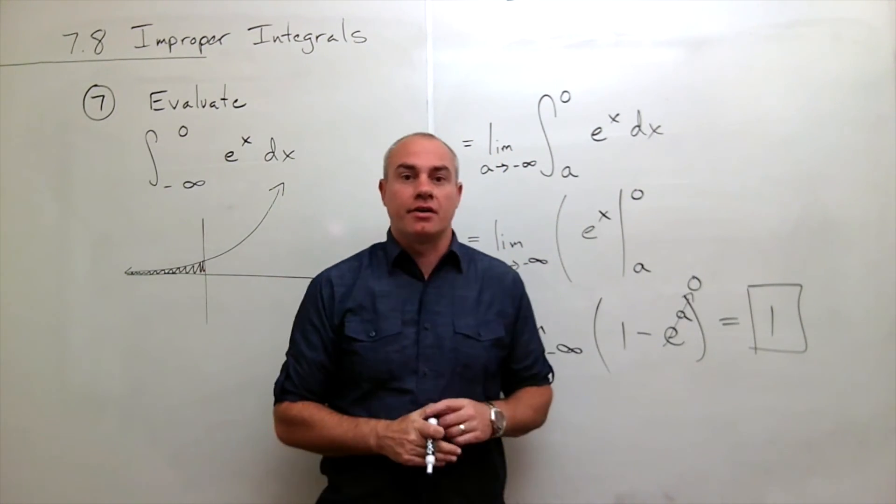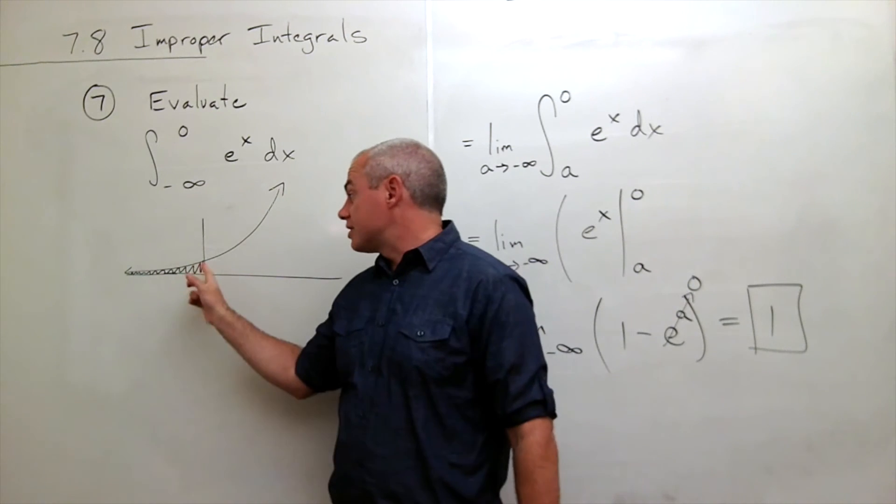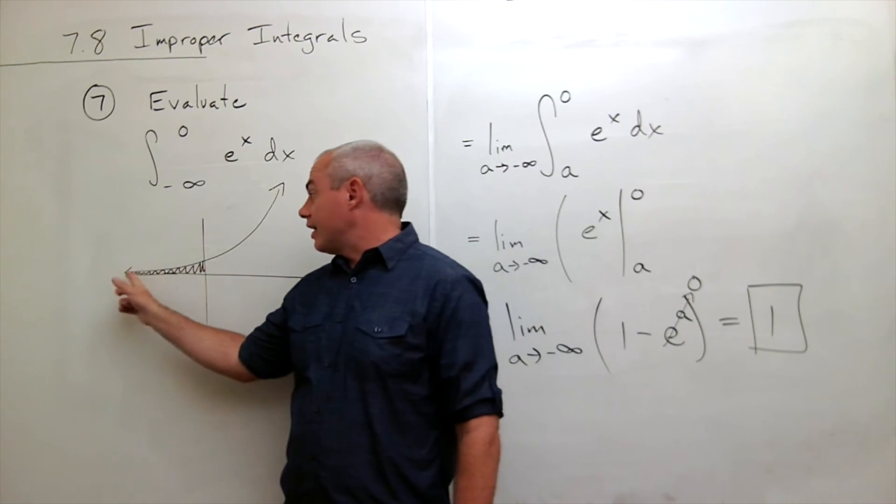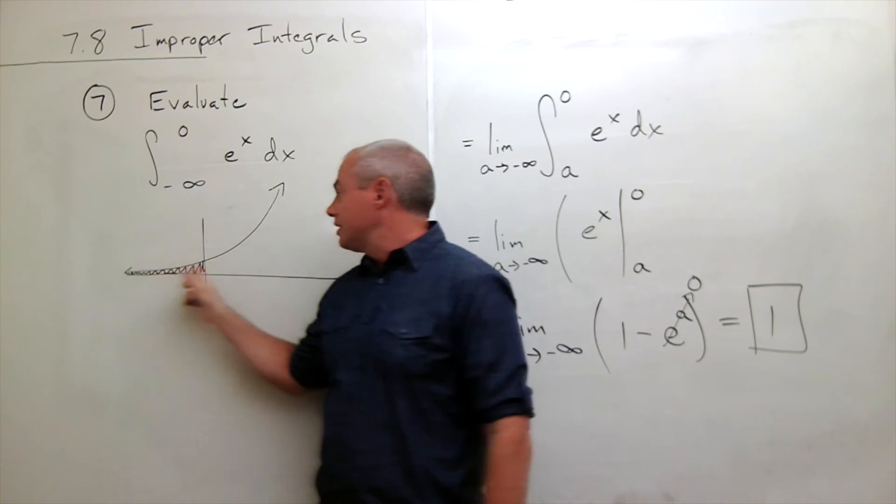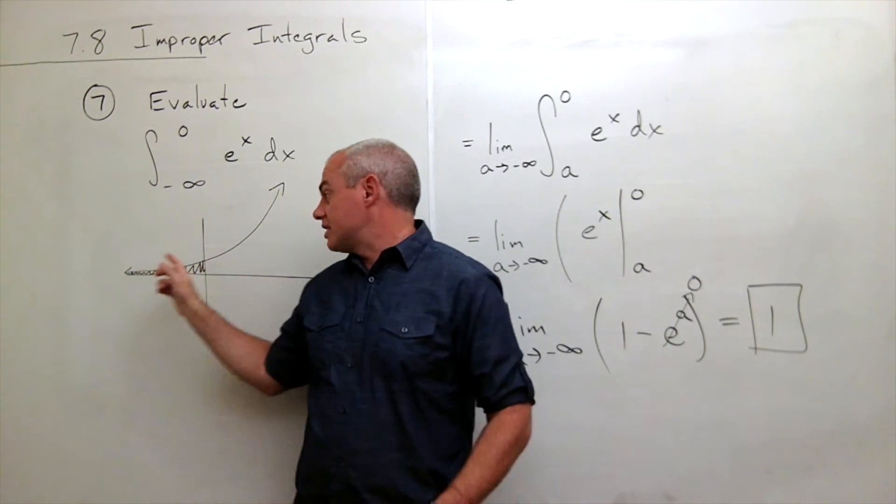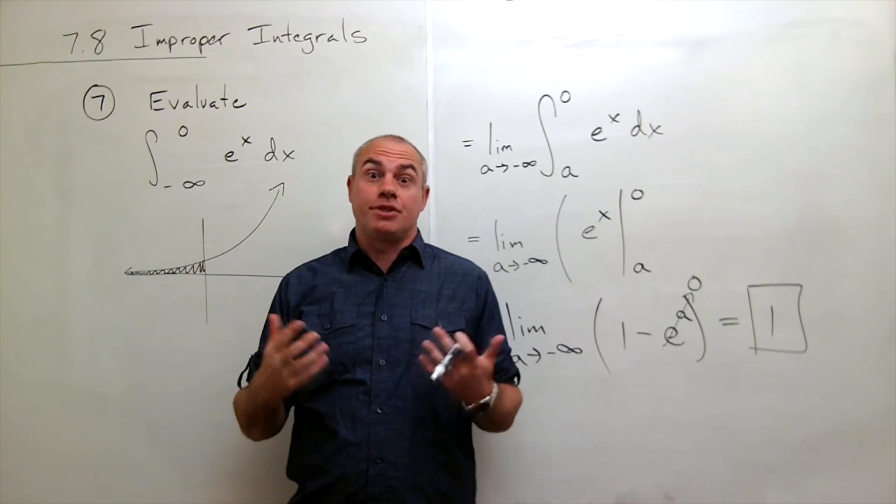And so our answer here is one. In other words, the area in this infinite tail that we see here all adds up to just one.